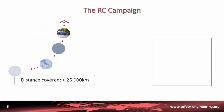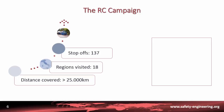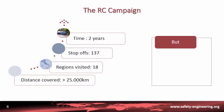This communication campaign covered 25,000 kilometers in Italy, visiting 18 regions with 137 stops all along the path, over a period of approximately two years. The model used was essentially a 'citizens come and ask' one-way process.